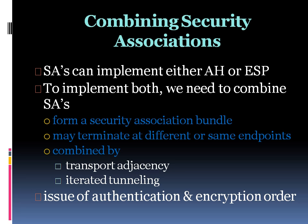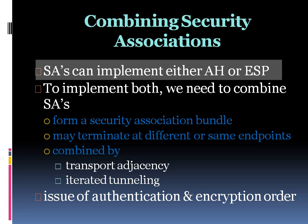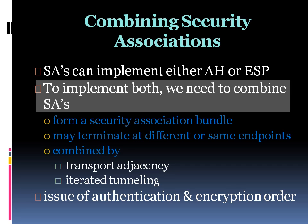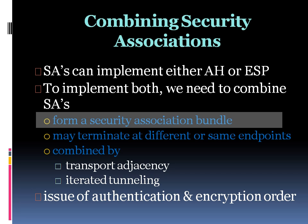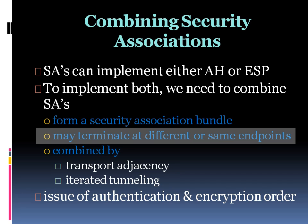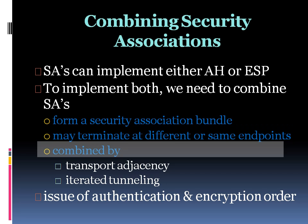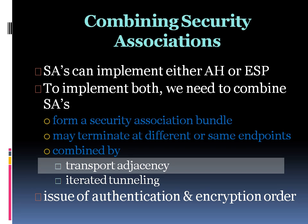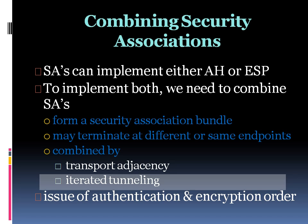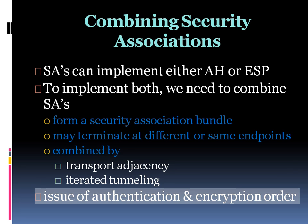Moving on to Combining Security Associations — we know that SAs, or Security Associations, can implement either AH (Authentication Header) or ESP (Encapsulating Security Payload). But if we want to implement both, we need to combine the SAs. This can be done by forming a Security Association bundle, where the term refers to a sequence of SAs through which traffic must be processed to provide a desired set of IPSec services. The SAs in a bundle may terminate at different or same endpoints. Security associations may be combined into bundles in two ways: transport adjacency and iterated tunneling.